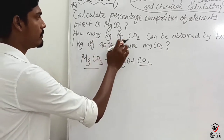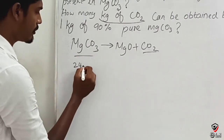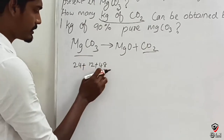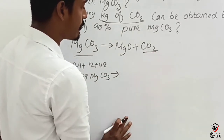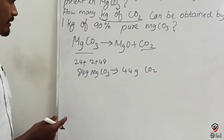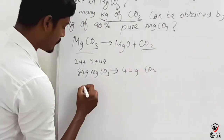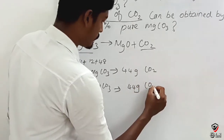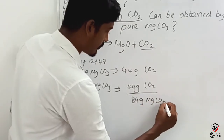Let's go to grams. MgCO₃: Mg is 24, carbon is 12, oxygen O₃. Total: 24 + 12 + 48 = 84. CO₂: carbon 12, oxygen 32, total 44 grams. So 84 grams of magnesium carbonate, when heated, gives 44 grams of CO₂. Therefore 1 gram of magnesium carbonate gives 44 grams of CO₂ divided by 84 grams of MgCO₃.